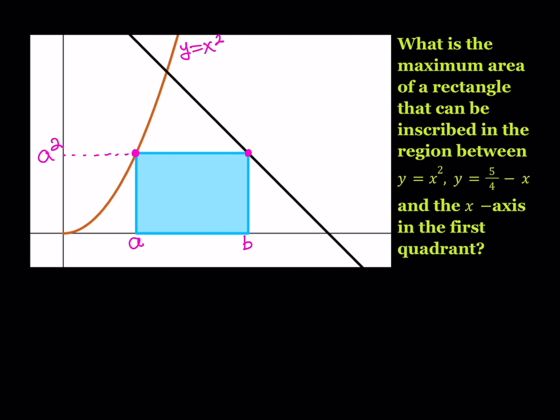Since this point is on the line and the equation for the line is y equals 5 fourths minus x, the y-coordinate for that point — where the x-coordinate is b — is going to be 5 fourths minus b. Forget about the parabola and the a squared for now. If you just had this line and the vertex of the rectangle you would name it that way. Notice that the y-coordinates for these two points are the same because the top of the rectangle is a segment parallel to the x-axis, so it has zero slope. We can safely say that 5 fourths minus b equals a squared.